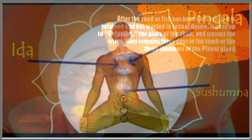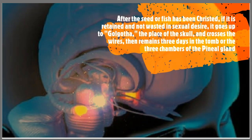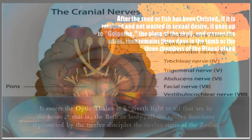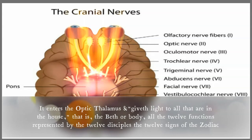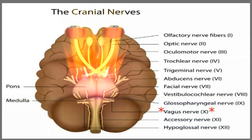After the seed, or the fish, has been christified, or christed — if it's been retained and not wasted in sexual or earthly desires — it goes up to Golgotha, the place of the skull, and crosses the wires, then it remains there an additional three days in the tomb, or the three chambers, of the pineal gland. It enters the optic thalamus, or the optic chasm, and "giveth light to all that are in the house" — that is, Beth, or the body — all the twelve functions represented by the twelve disciples, the twelve signs of the zodiac, and the twelve cranial nerves, or twelve pairs of cranial nerves.